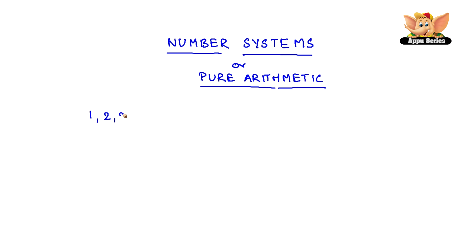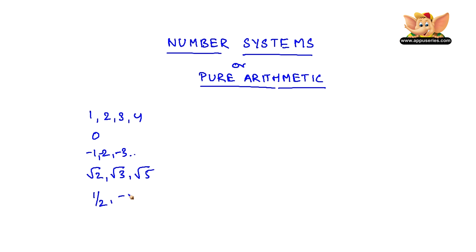For example: 1, 2, 3, 4, 0, minus 1, minus 2, minus 3, and so on. More numbers such as root 2, root 3, root 5, etc. Also 1 by 2, minus 2 by 3, and several others. Since we encounter all these numbers in our day-to-day activities, it's important for us to learn how to categorize these numbers into different categories. Number systems or pure arithmetic is actually learning about categorizing these numbers.